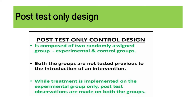Treatment or manipulation is implemented only for the experimental group, not the control group. There is no pre-test for either group. Treatment is given only to the experimental group. Post-test is conducted after the treatment for both the experimental group and the control group, but the control group receives no treatment. So: no pre-test for both groups, treatment only for the experimental group, and post-test for both groups.